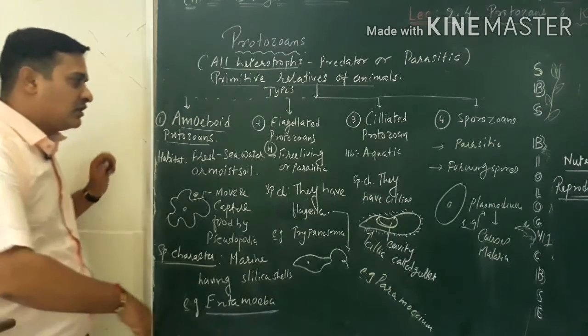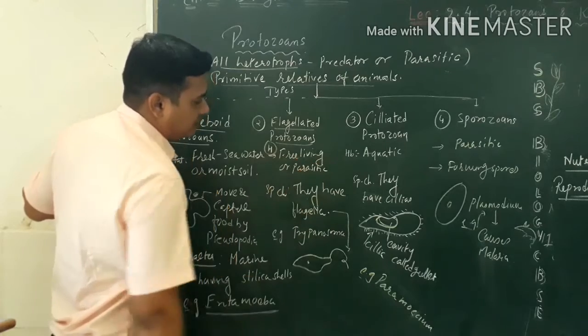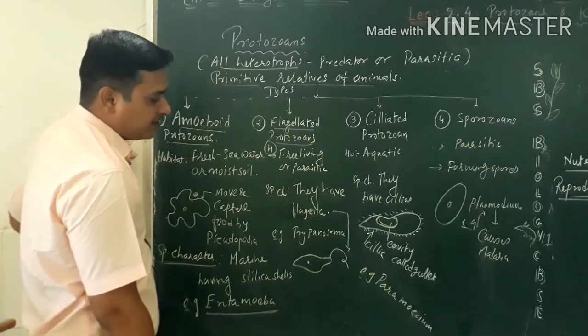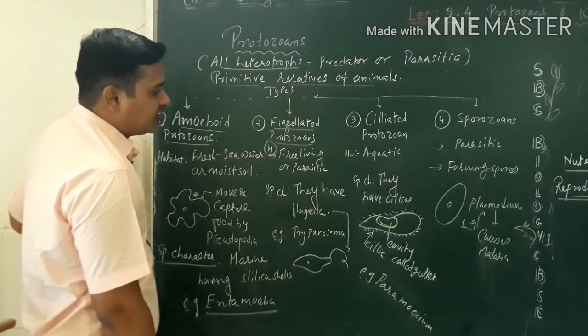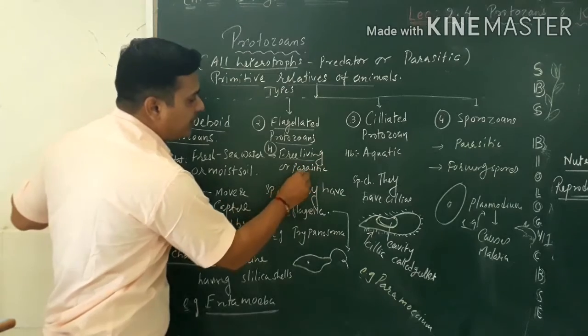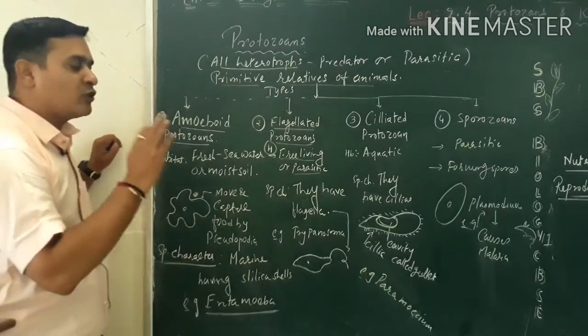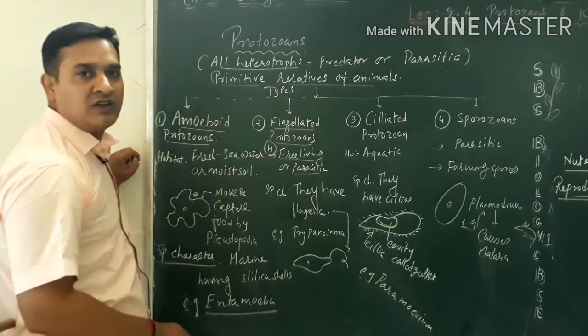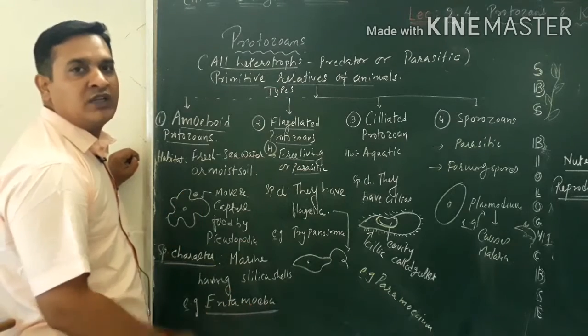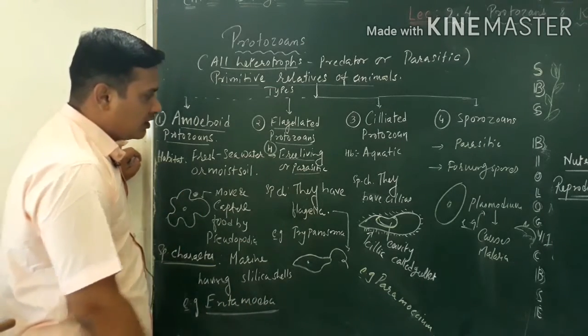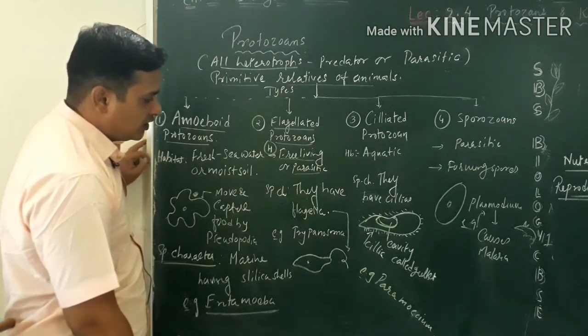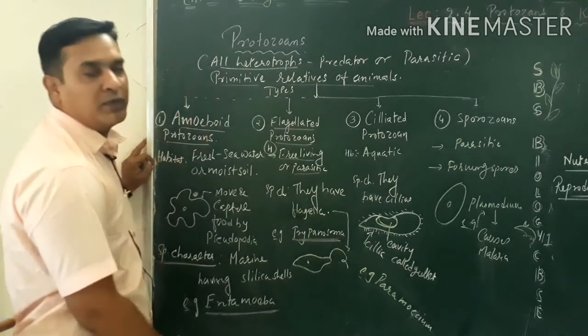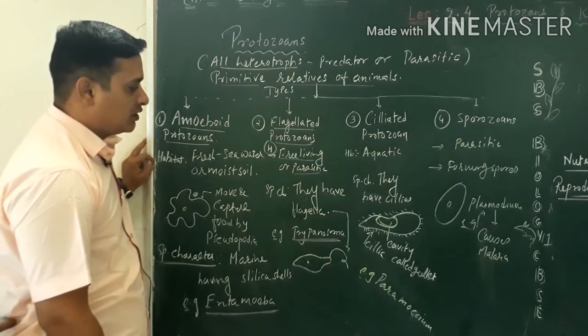Now second, protozoans are flagellates. Flagellates have flagella at the tip of their cell as the chief organ. Majority are free living or parasitic. They are either free living or parasitic, living into the host. Example is the Trypanosoma.